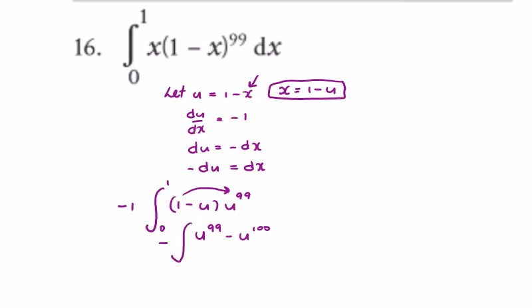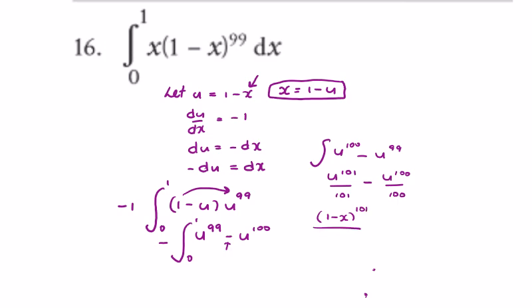We have the integral of this with a minus in front, between 1 and 0. Bringing the minus in first reverses the limits, so this becomes the integral of u to the power of 100 minus u to the power of 99. Integrating gives u to the power of 101 over 101 minus u to the power of 100 over 100. Substituting back gives 1 minus x to the power of 101 over 101, minus 1 minus x to the power of 100 over 100, all evaluated between 1 and 0.